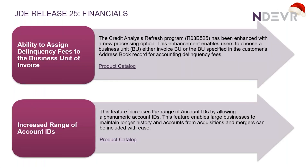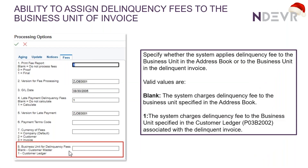In the financials area there are two in particular. The first is around the delinquency fees as Sasha mentioned, and the other one is an increased range of account IDs — FO901 account IDs. Let me show you a bit more detail.